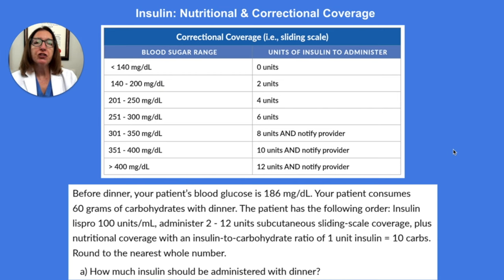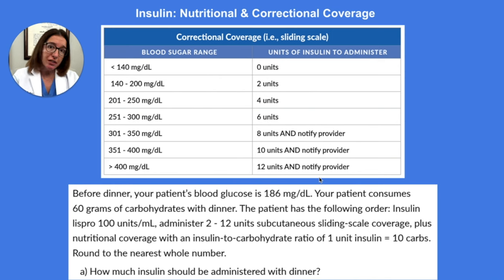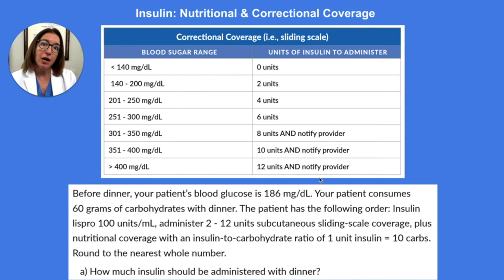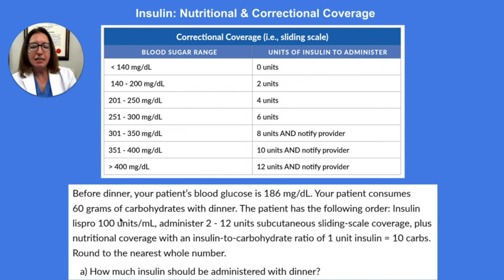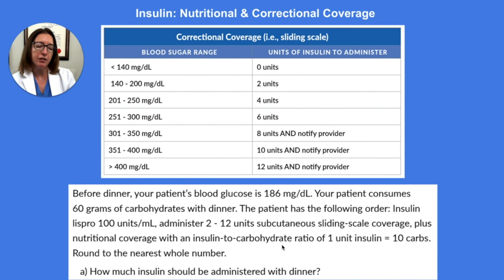If your patient has nutritional and correctional coverage, the amount of insulin they'll receive is dependent on their blood glucose level before eating using the sliding scale, plus additional insulin based on how many carbs they consumed using the prescribed insulin-to-carbohydrate ratio. In this example, before dinner, our patient's blood glucose is 186, and they consume 60 grams of carbohydrates with dinner. The order is: Insulin Lispro, 100 units per ml, administer 2 to 12 units subcutaneous, sliding scale coverage, plus nutritional coverage with an insulin-to-carbohydrate ratio of 1 to 10. How much insulin should be administered with dinner?